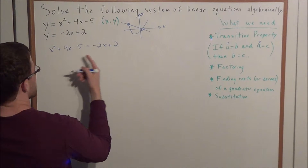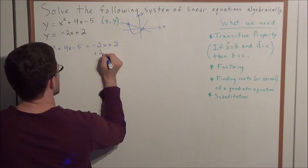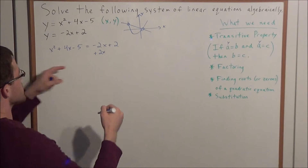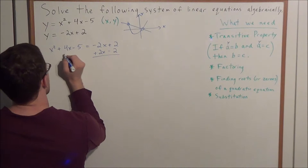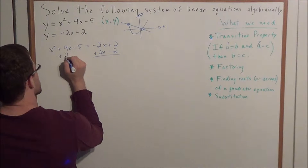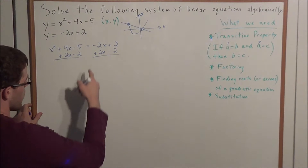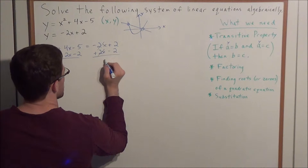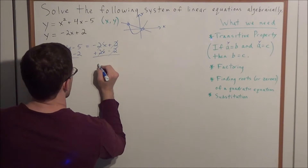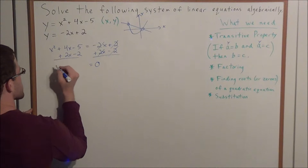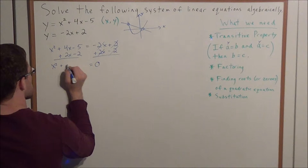Now let's get all terms on one side. Since we're factoring a quadratic, we need it to equal 0 on the right-hand side. We add 2x and subtract 2 from both sides. On the right-hand side, negative 2x plus 2x cancels, and positive 2 minus 2 cancels, giving us 0. On the left-hand side, we have x squared, 4x plus 2x gives plus 6x, and negative 5 minus 2 gives minus 7.